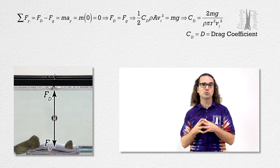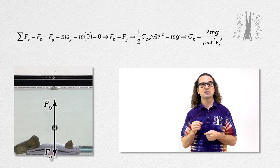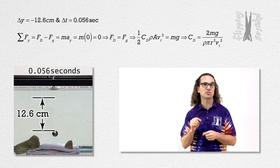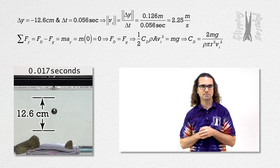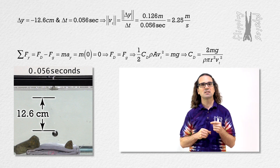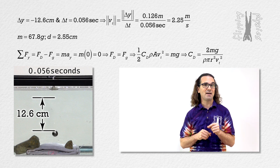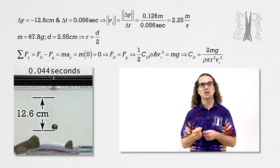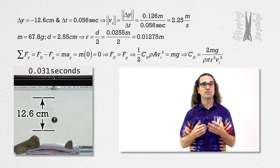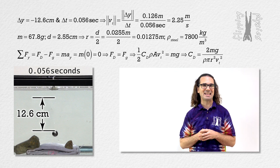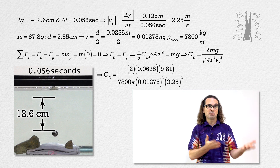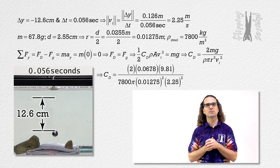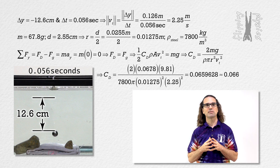To determine the terminal speed of the steel sphere, I measured that it goes down a distance of 12.6 centimeters in a time of 0.056 seconds. That gives us a terminal velocity of magnitude 2.25 meters per second. The mass of the steel sphere is 67.8 grams. Its diameter is 2.55 centimeters, which means it has a radius of 0.01275 meters. The density of steel is 7,800 kilograms per meter cubed. When we plug all of those numbers into the equation Billy derived for the drag coefficient, we get 0.0659628, or 0.066 for the drag coefficient of the steel sphere.